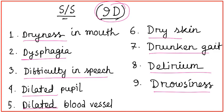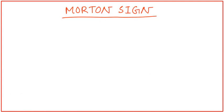Except for these, there are also some important signs like burning pain in the stomach and vomiting, pulse is rapid, visual and auditory hallucination, photophobia, and light reflex is absent. Let's discuss the Morton sign of Dhatura poisoning.